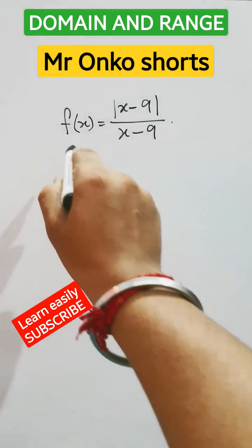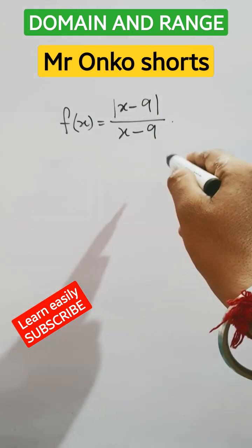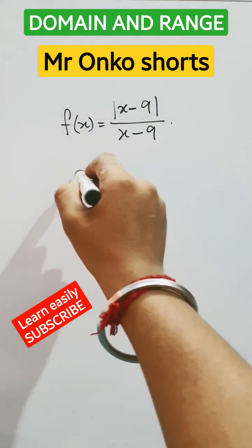Welcome to Mr. Onko Shorts. Today we are given a function f(x) = |x - 9|/(x - 9). We have to find the domain and range of the given function.